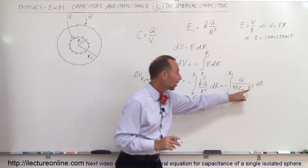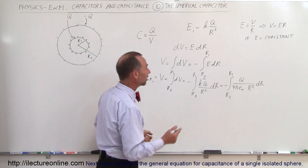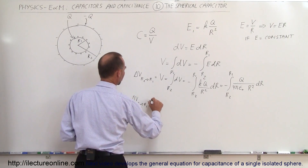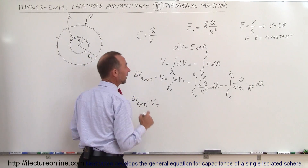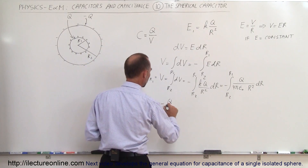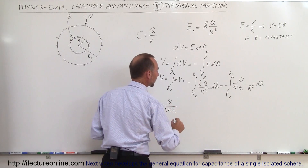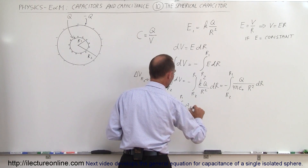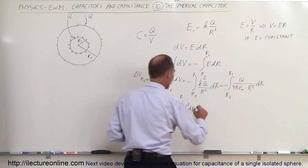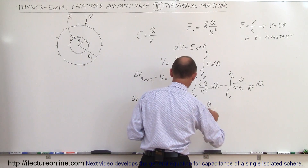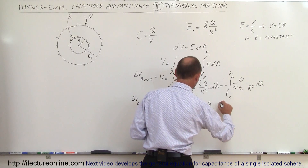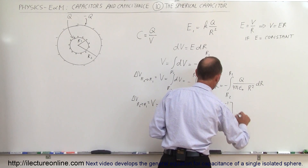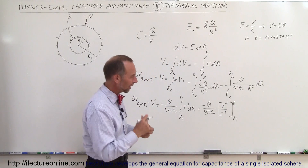Rewriting R squared as R to the negative 2 makes it easier to integrate. Taking the constants outside, the change in potential V equals minus Q over 4π epsilon naught times the integral from R2 to R1 of R to the negative 2 dR. Integrating — adding one to the exponent and dividing by the new exponent — gives minus Q over 4π epsilon naught times R to the negative 1 over negative 1, evaluated from R2 to R1.